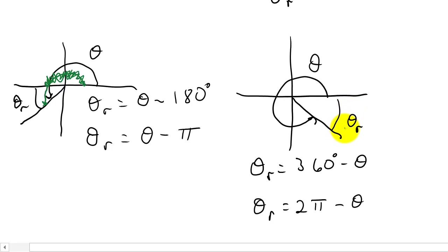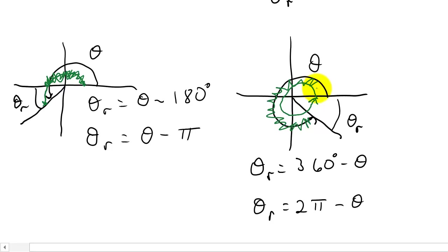Now let's look at the reference angle in the fourth quadrant. If our angle is in the fourth quadrant, the reference angle is measured off the x-axis. To find it, we go all the way around to 360 degrees and then subtract off theta, which leaves us with just the reference angle. So it would be 360 minus theta, or if you're in radians, 2 pi minus theta.